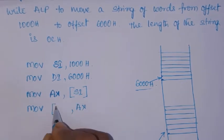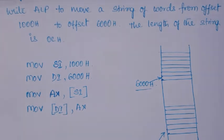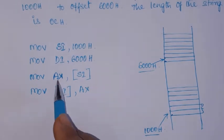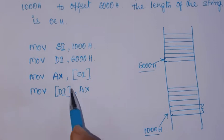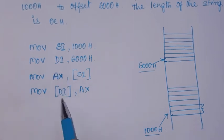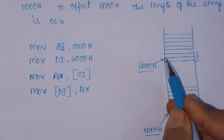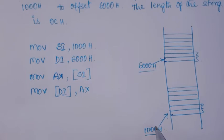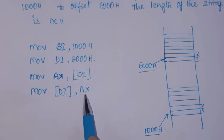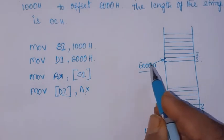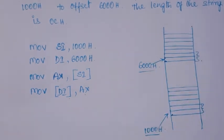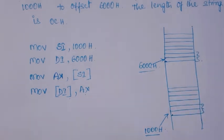With the first instruction, the word at source location 1000H is moved to AX register. With the second instruction, the contents of AX register are moved to the location pointed by DI, which is 6000H and 6001H. So one word from 1000H and 1001H is moved to AX, and then that same data is moved to 6000H and 6001H of the destination.